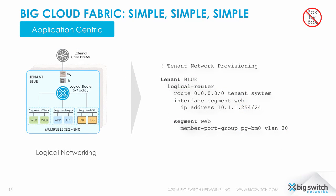Here's a closer look at the application-centric logical architecture. A tenant within the architecture — in this example, tenant blue — has its own logical router instance. Behind that router are layer 2 application segments that can communicate through the router to each other and to application segments in other tenants, completely based on how you define the routing policies. This logical network is completely decoupled from the physical network. Network administrators can take logical network diagrams and easily translate them into configurations for the BCF controller.